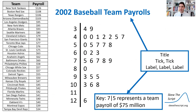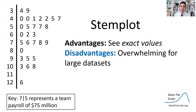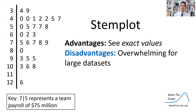As always, to get full credit: title, tick marks, and labels. What's really important for a stem plot is having a key. In this case, 7|5 represents a team payroll of $75 million, where 7 is the stem and 5 is the leaf. An advantage of the stem plot is that you get to see exact data values — you don't have to estimate them from a scale. The disadvantage is that it's overwhelming for large data sets, and it would be a lot to plot if you have thousands of data points.